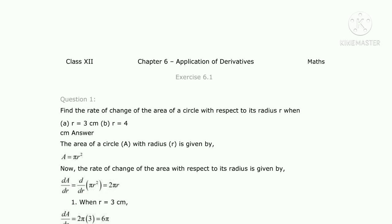The chapter is actually very easy. The first question: find the rate of change of the area of a circle with respect to its radius r, when r equals 3 and r equals 4. We need the formula for the area of a circle, which is pi r squared.